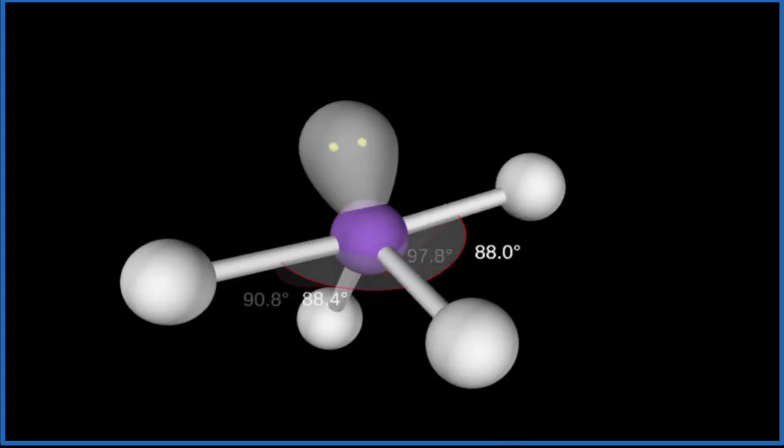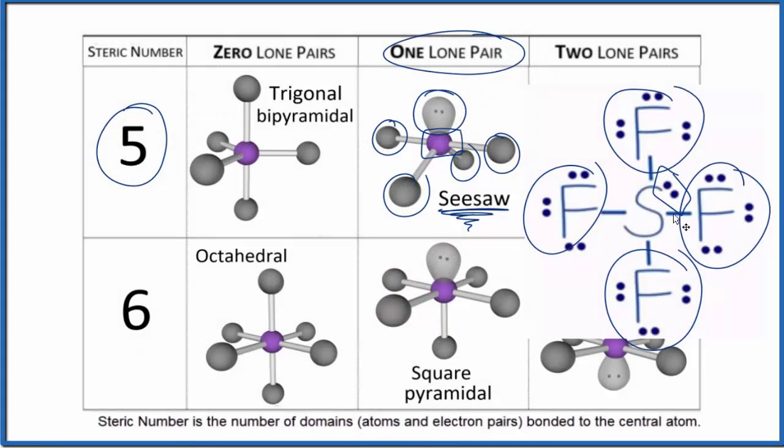Let's go back. So we have five things attached. Four of them are atoms and one lone pair. That's the seesaw molecular geometry.